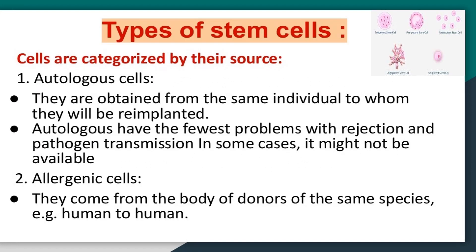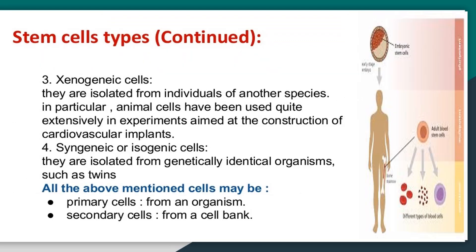Cells are categorized by their source. First, autologous cells are obtained from the same individual to whom they will be re-implanted. Autologous cells have the fewest problems with rejection and pathogen transmission, though in some cases they might not be available. Second, allogeneic cells come from the body of donors of the same species — for example, human to human.